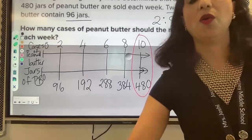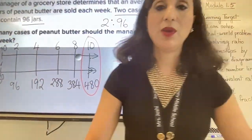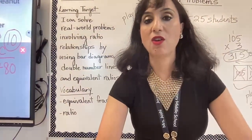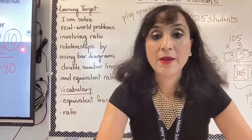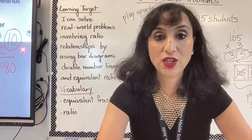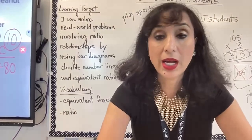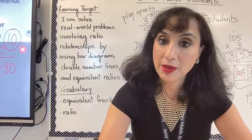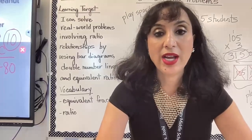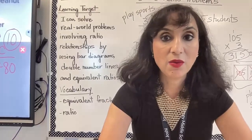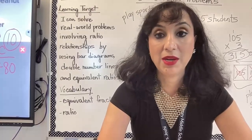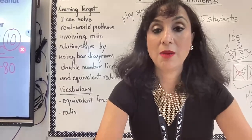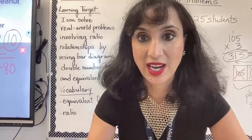So that's a quick summary of our learning target: solving real-world problems involving ratio relationships. I showed you how to use bar diagrams, how to use double number lines, and how to create equivalent ratios — several ways to solve the same problem. That concludes Module 1.5. Have a great day.